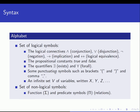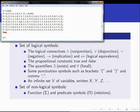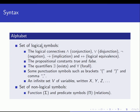We also have punctuation symbols like brackets, parentheses, and a comma. And finally, we have an infinite set V of variables written like x, y, z. For example, in Prolog, when running a predicate like 'solution(X)', I provided the predicate with a variable X. So we have a set of logical symbols in our alphabet, and also a set of non-logical symbols.